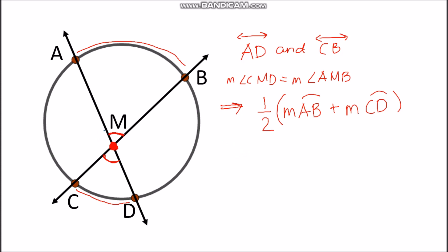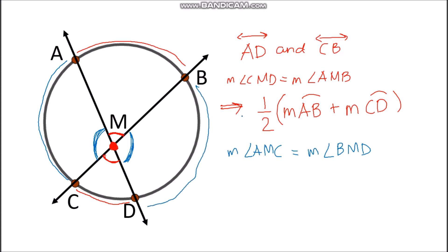Another pair of angles we have is angle AMC and angle BMD. Again, these two angles are vertical angles, so they have the same measurement — angle AMC equals angle BMD. To get the measurements of either angle, we get half the sum of the intercepted arcs, which are arc AC and arc BD. We add measurement of arc AC plus measurement of arc BD, then divide by 2.